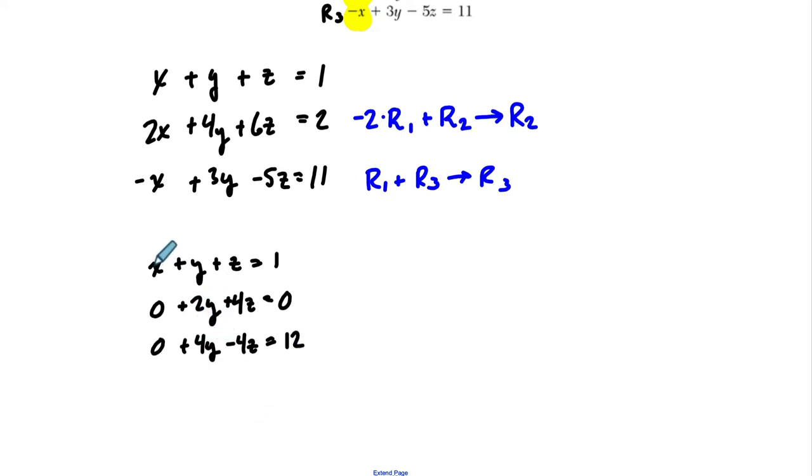Okay, so next, I want to essentially eliminate this term right here. And then I'm basically done with the problem. So to make my life easier to do that, I notice that I have a 2y here. So if I do negative 2 times the second row and add to the third row, and put that result in the third row, I'll basically have my solutions.